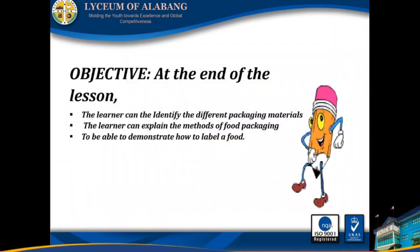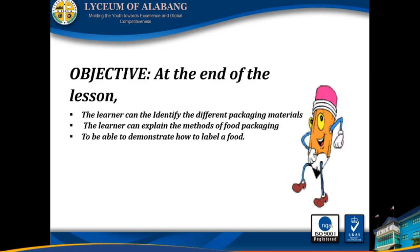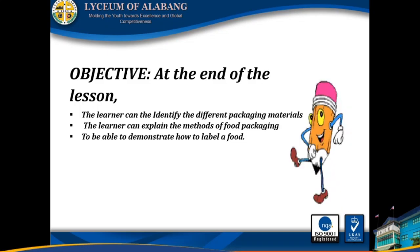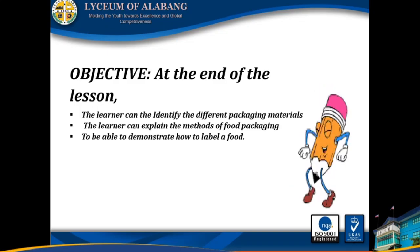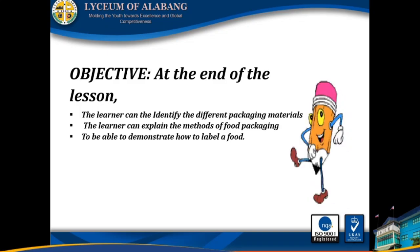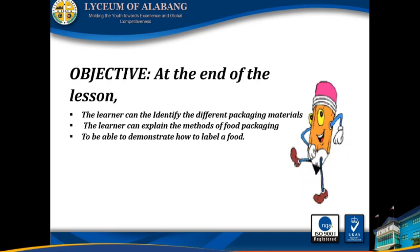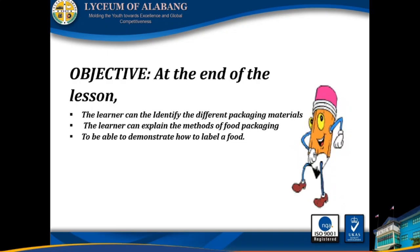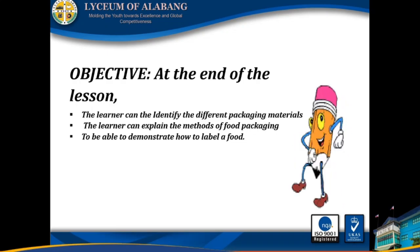Objectives. At the end of the lesson, the learner can identify the different packaging materials. Number two, the learner can explain the method of food packaging. And number three, to be able to demonstrate how to label a food.